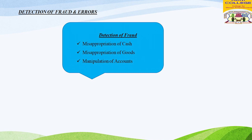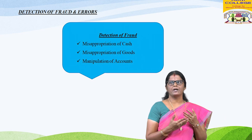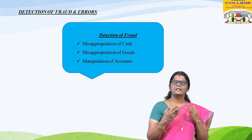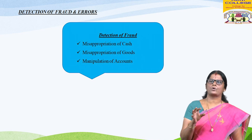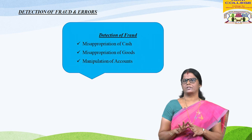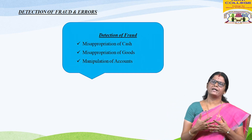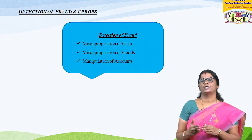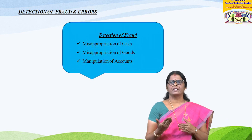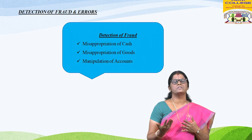Manipulation of accounts is mainly done by top management to mislead certain parties for specific purposes. Showing higher profits may be done to obtain credit from financial institutions, to show creditworthiness to suppliers, to maintain shareholder confidence, to earn more commission calculated on profit, or to declare dividends at a higher rate. Showing lower profits may be done to avoid or reduce direct taxes, to purchase shares at a lower price, or to give a wrong impression to competitors of the business.